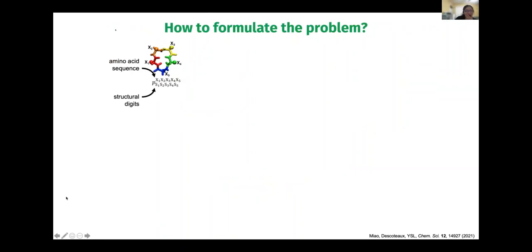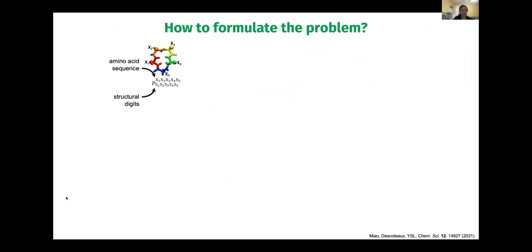How do we formulate this problem? We are building a very interpretable model. We are trying to predict the population of a specific sequence x1, x2, x3, x4, x5 adopting structural digits s1, s2, s3, s4, s5. In the chemist's mind, this has something to do with the energy for that conformation. The population of conformation i equals its Boltzmann factor divided by Q, the partition function — the sum of all conformation Boltzmann factors — which ensures that when you sum up all possible conformation populations, it equals 100%.